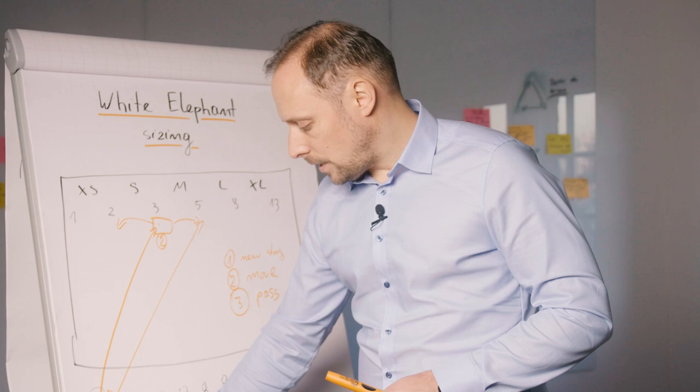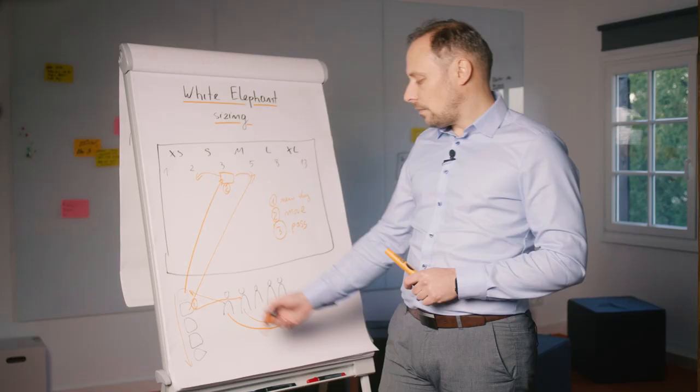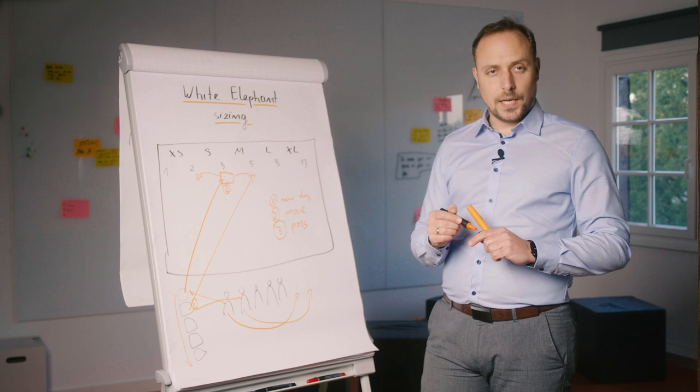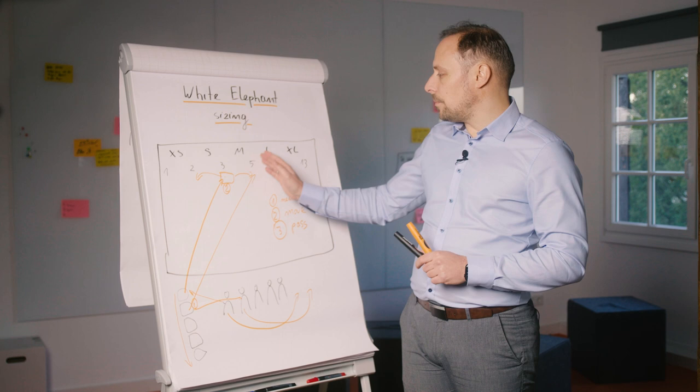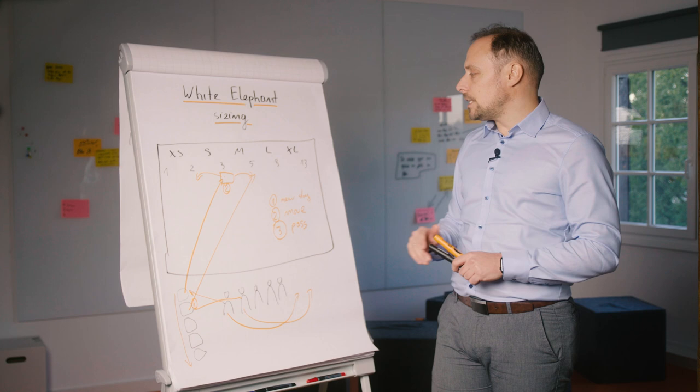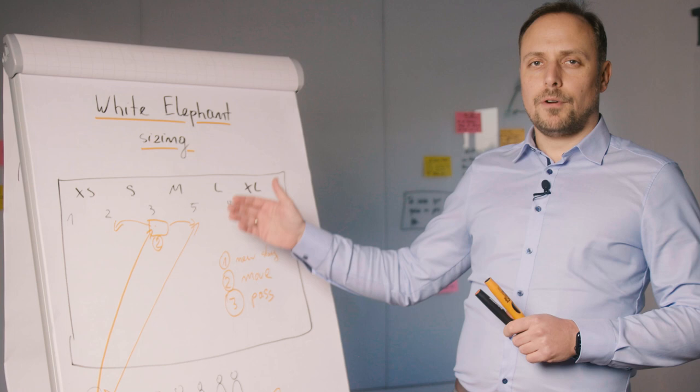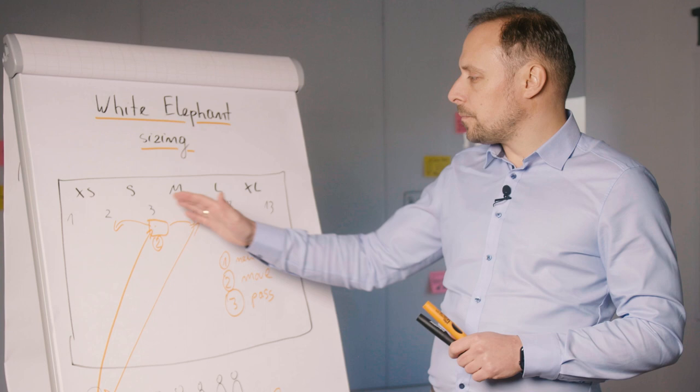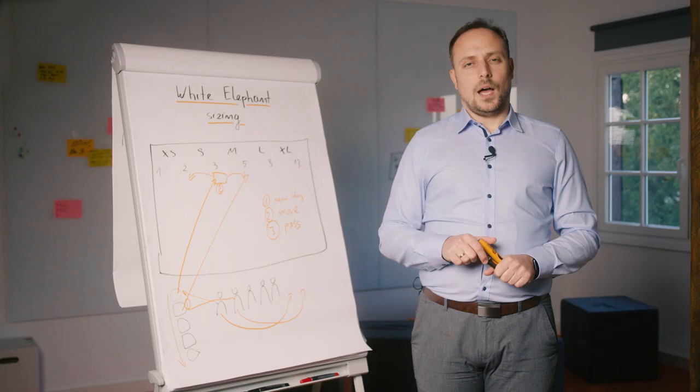The process continues until we reach the end of the backlog or until the time box expires. It could happen that some of the stories will be moved back and forth to the same columns multiple times. It's a good practice to define rules preventing this from happening, for example, the amount of moves for each card that are allowed or the amount of visits to particular columns.